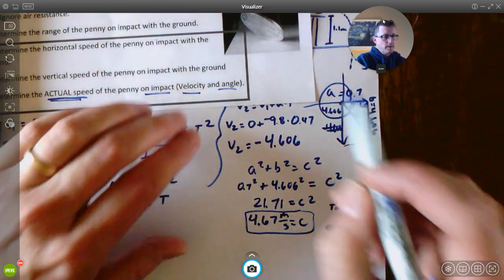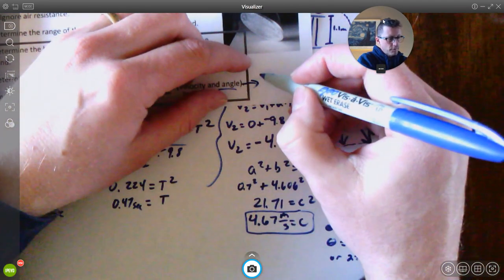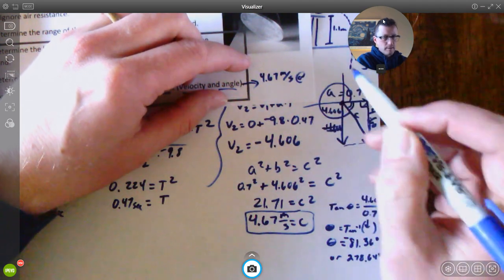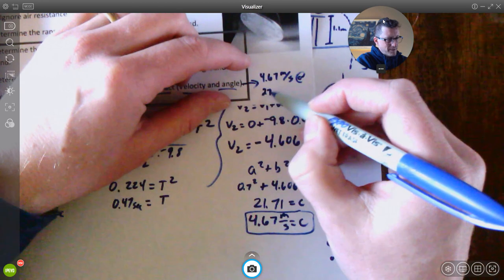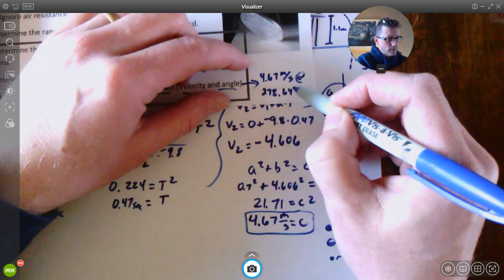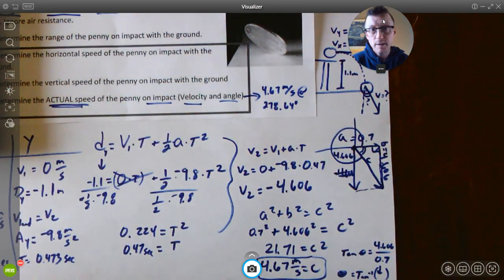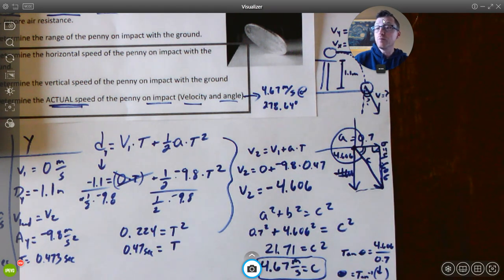So our final answer here is 4.67 meters per second at, you could say, 278.64 degrees. That was a little harder. I wanted to make sure that we go through that together. If you have any questions, I know that was a lot. Please send those my way. If this video was helpful for you, please do the like for me. If it was not helpful, you know, thumbs down. And I'm always welcome for some constructive criticism. So in those comments, leave me something that I can use. Thank you.